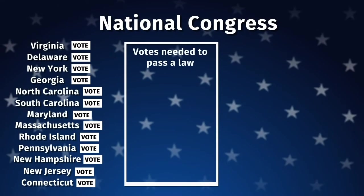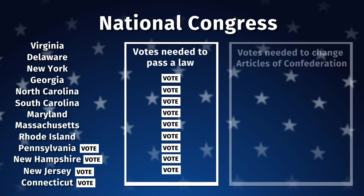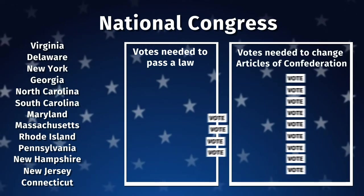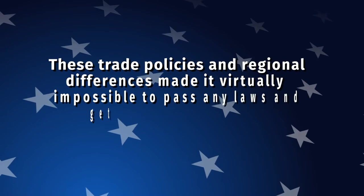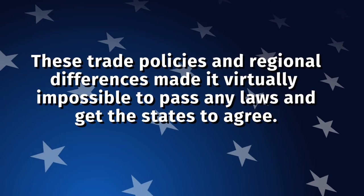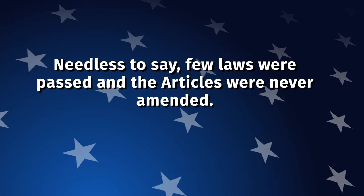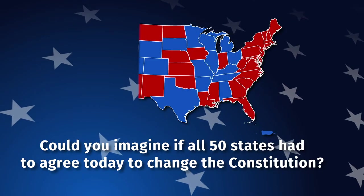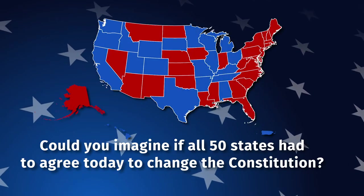To make matters worse, all of the states had different trade laws, so foreign countries would need to create different trade agreements with each individual state — something they were not willing to do. Things became so chaotic, European countries were waiting for the United States to fall apart and go crawling back to Great Britain. Nine out of 13 states needed to agree to pass new laws, and all 13 had to agree to change the Articles, making it virtually impossible. Few laws were passed and the Articles were never amended.